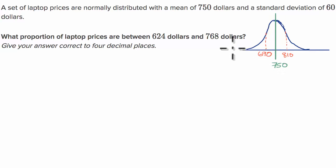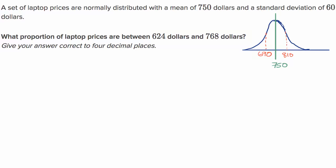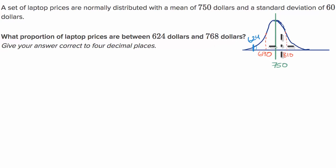They ask what proportion of laptop prices are between $624 and $768. The lower bound, $624, is going to be more than another standard deviation below, so it sits right around here. And $768 would be right about here. This is just a hand-drawn sketch.